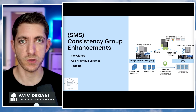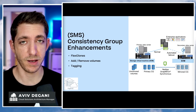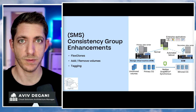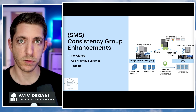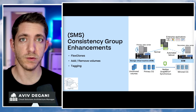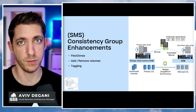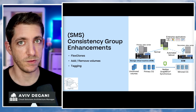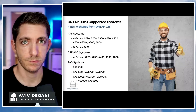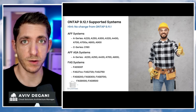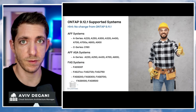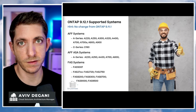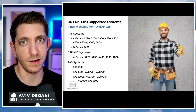SnapMirror Synchronous, which is amazing, also got some kind of a retro vibe from the 7-mode system. When you're using a consistency group, you can now add and remove volumes from that group. You can add tagging, and you can also include FlexClones inside. And if you want to install 9.12.1 on your FAS or AFF system, the supported systems are the same as 9.11.1.